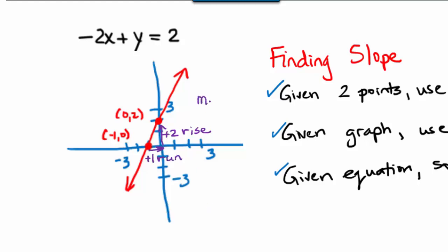So one way of representing our slope, m, would be positive 2 over positive 1, which reduces to just 2.